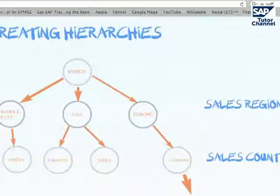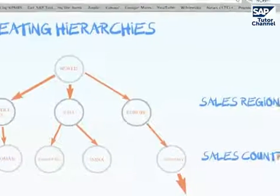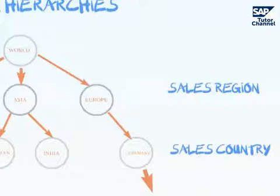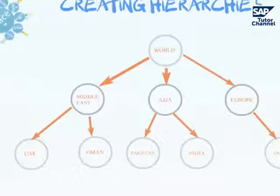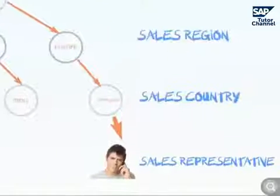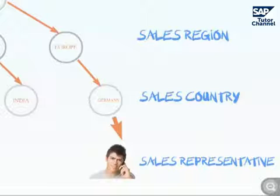Under each region node, they each have different nodes as well. We also have sales country. Under the Middle East we have UAE and Oman. Under Asia we have Pakistan and India. Under Europe we have Germany. Our sales representative, let's call him John Smith, he's German and he's organized under the sales country Germany, and under the sales region Europe.